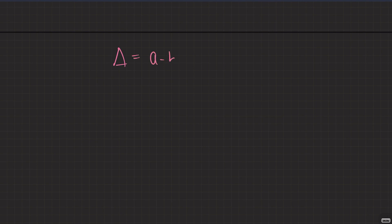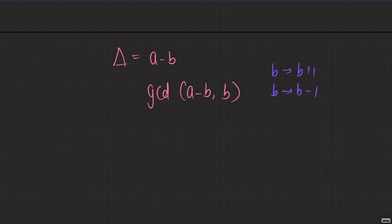Let delta = a − b. This delta is fixed. The maximum excitement we can get is delta. The effective operation now is b = b + 1 or b = b − 1 (since a − b doesn't change). We need to find the nearest multiple of delta to b, and the distance to that multiple is the minimum number of operations.